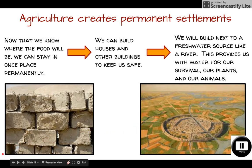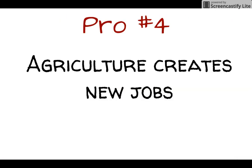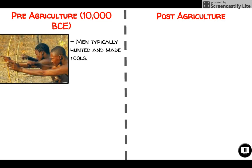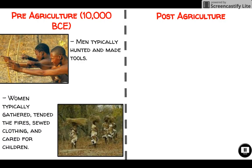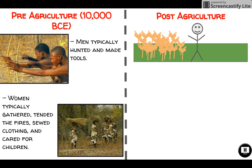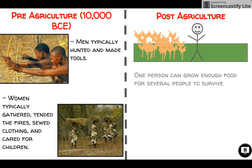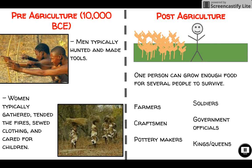The final big pro is that agriculture opens up the ability to create more jobs. When hunter-gatherers dominated the planet, men hunted and made tools while women gathered food, tended fire, sewed, and cared for kids — that was the limit of jobs. With agriculture, if one person can grow enough food for 50, 60, or even 100 people, those others can work different jobs. We see new professions like farmers, craftsmen, and pottery makers, and eventually soldiers, government officials, and kings and queens.